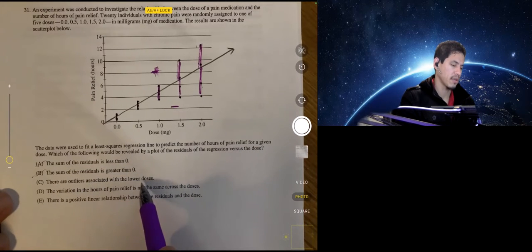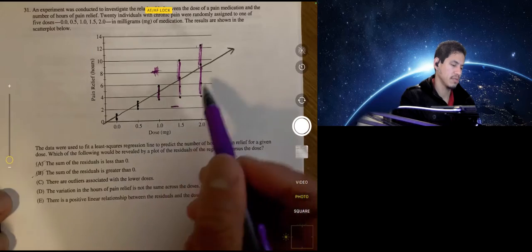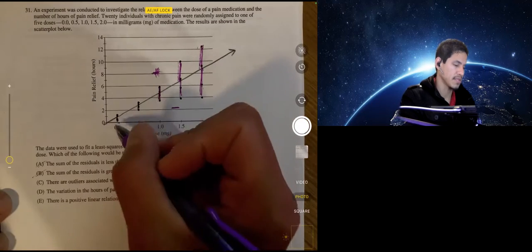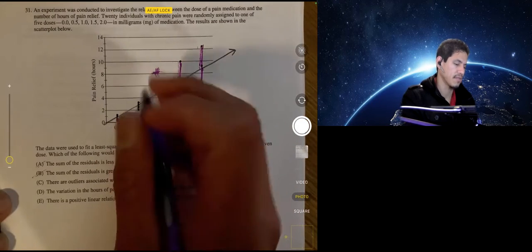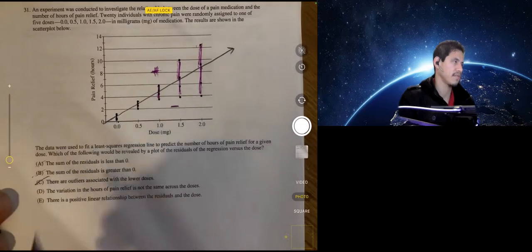There are outliers associated with the lower doses. So the lower doses would be over here. And these are, no, the opposite. These are actually closer. Remember outliers are values that are farther, so definitely not C.